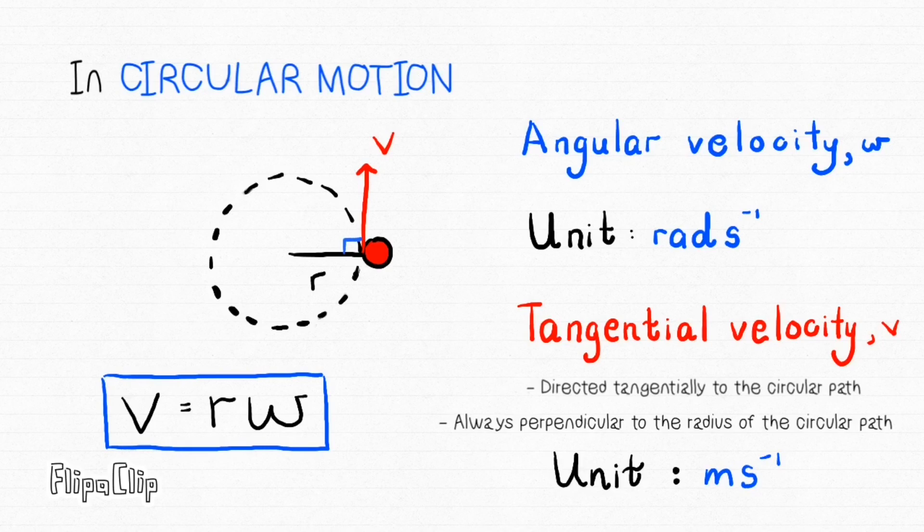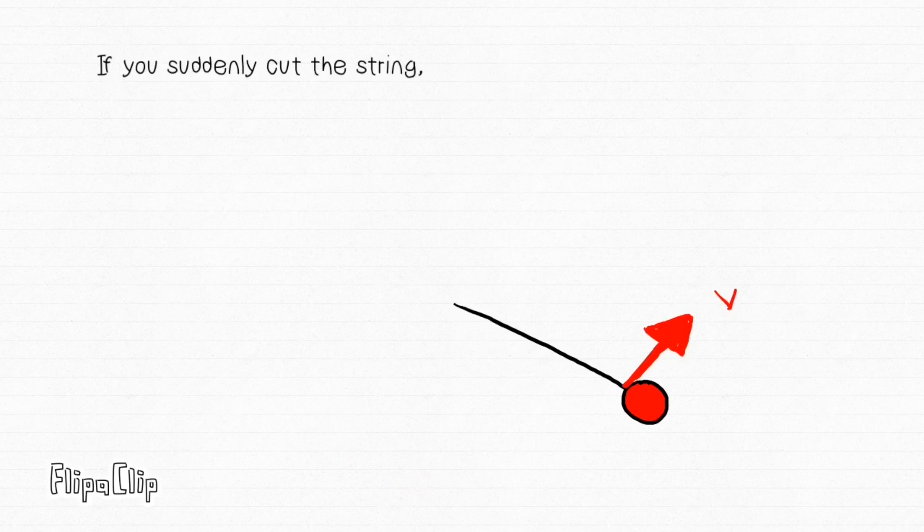Let's say we have a rotating object. If you suddenly cut the string, it will fly off in whatever direction the tangential direction was at that moment.